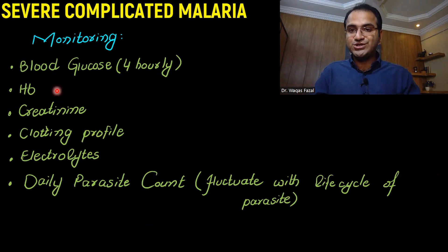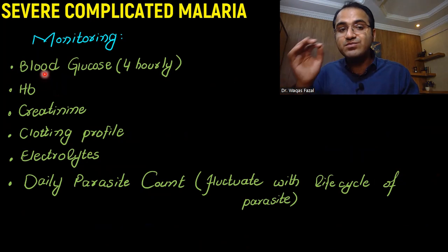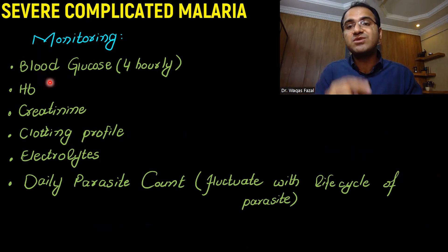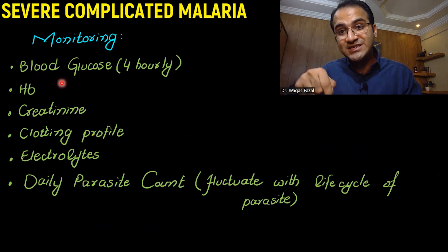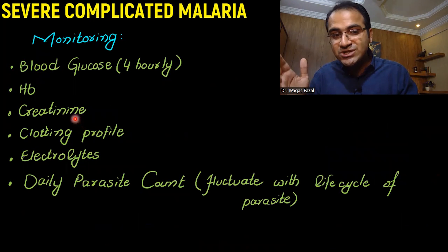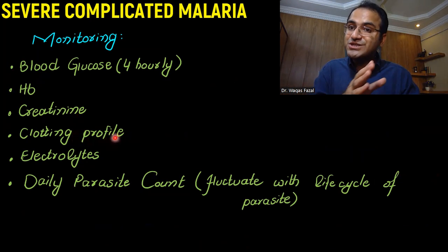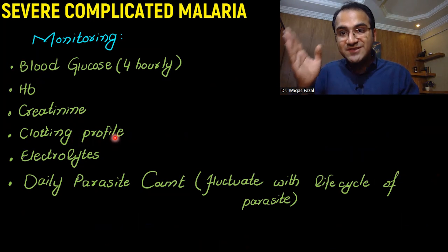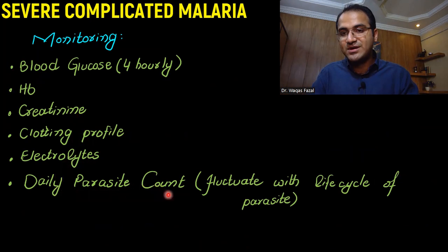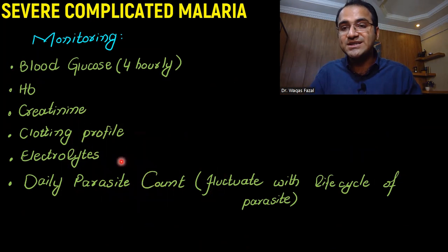When giving artesunate or quinine regimen for severe complicated malaria, you must monitor the patient carefully. Check blood glucose 4-hourly (or 2-hourly if on quinine). Check hemoglobin, check creatinine to detect acute kidney injury, and check the clotting profile to assess for DIC. If the patient has severe bleeding, DIC must be considered. Check electrolytes and perform daily parasite counts, which fluctuate with the parasite life cycle. This is how you monitor the patient with severe complicated falciparum malaria.